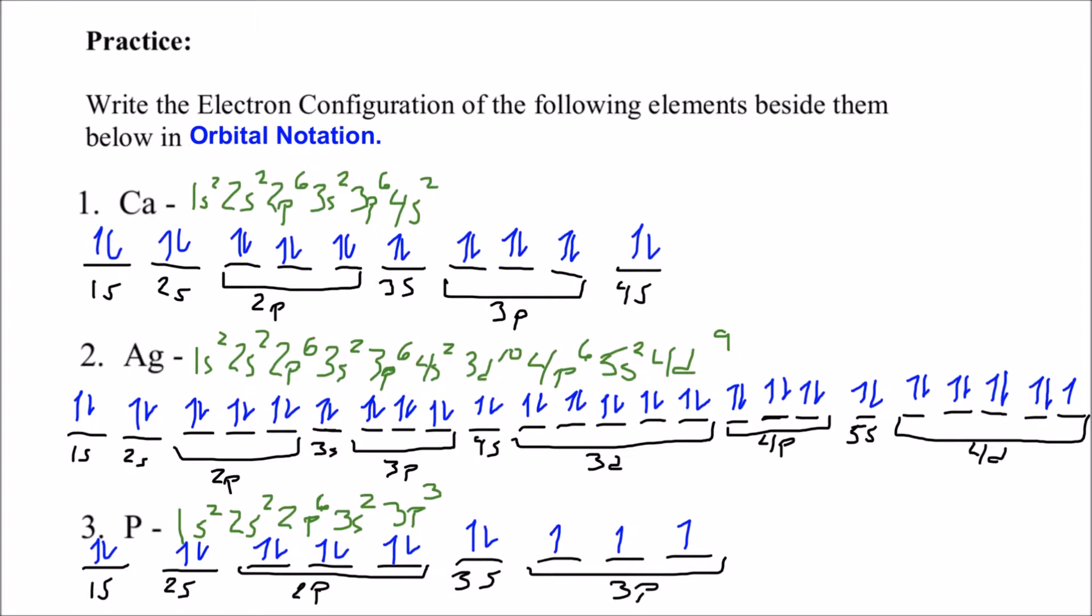Here's what I came up with for you on the orbital notation. I've given the electron configurations in green, and then the orbital notations are obviously here in black and blue. Calcium ends in 4s2, so we fill up all of the orbitals, and then the 4s1 has two electrons, so it's got both clockwise and counterclockwise.